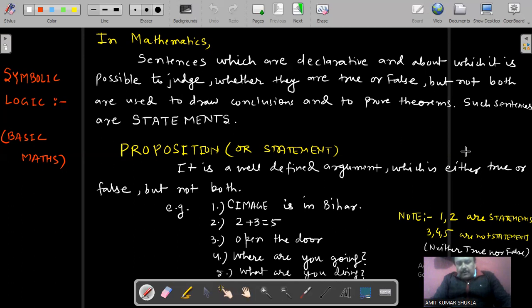So in symbolic logic, first of all, we can talk about statements. So statement, which we can say proposition, it is a well-defined argument which is either true or false, but not both.